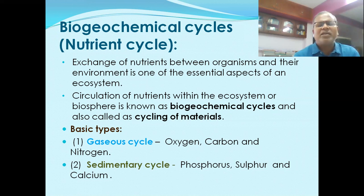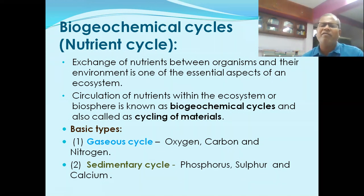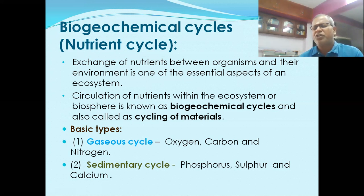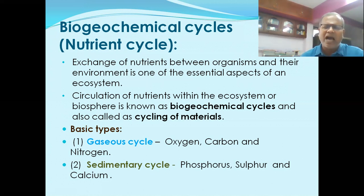One is the gaseous cycle — vali suracchi — which includes the atmosphere. Elements involved in the gaseous cycle are Oxygen, Carbon, and Nitrogen. The other type is the sedimentary cycle — padima suracchi — which includes Phosphorus, Sulphur, and Calcium.